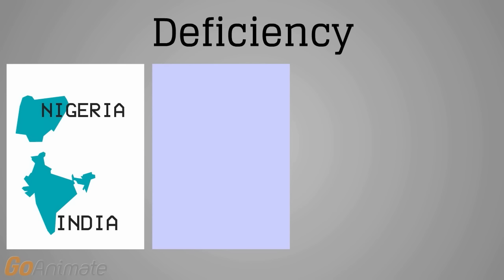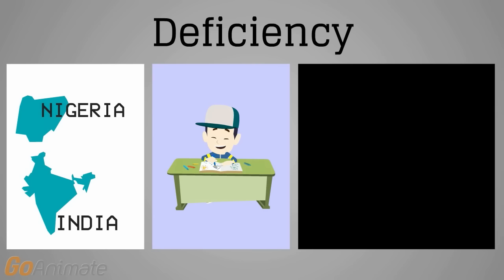Deficiency is more common during periods of high nutritional demand, such as during infancy and childhood. One of the most common symptoms of vitamin A deficiency is xerothalmia, or the inability to see in low light or in darkness.